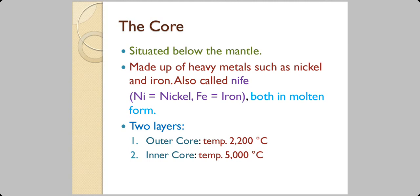The innermost part of the earth is known as the core and it is situated below the mantle. It is made up of heavy metals such as nickel and iron. The scientific notation for nickel is Ni and for iron it is Fe. Fe stands for ferrum which is the Latin name of iron. Both of them are metals and at such high temperatures both are in the molten form.